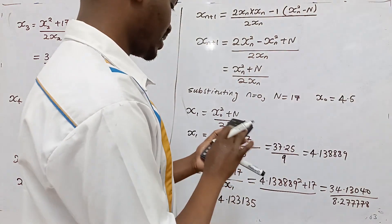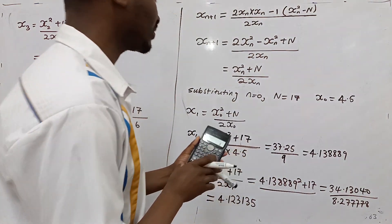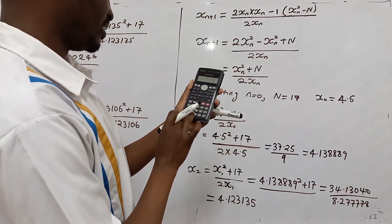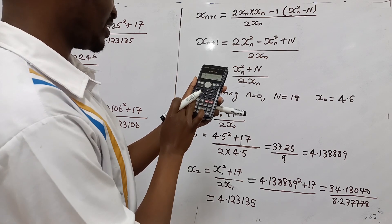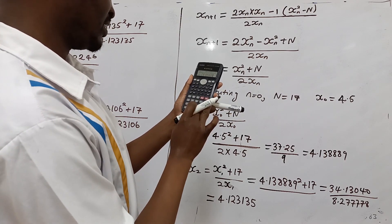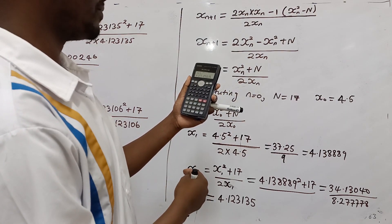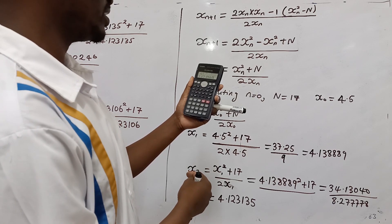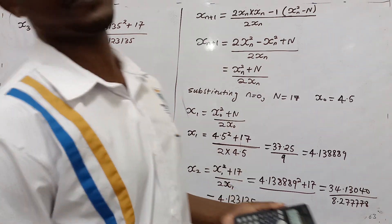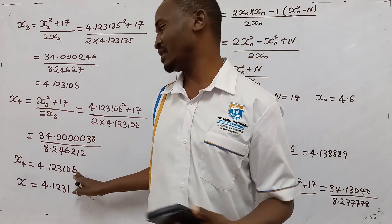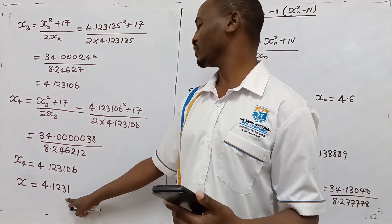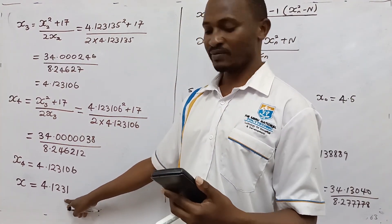Let's see what we get if you work out root of 17 directly from the calculator. Root of 17, if you work that out directly from the calculator, it is 4.123106, correct to 6 decimal places, as we have done it. But you are only required to give the answer correct to 4 decimal places.